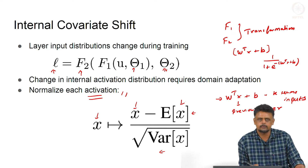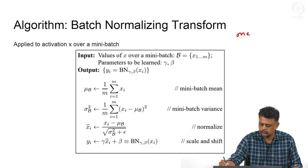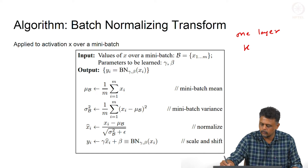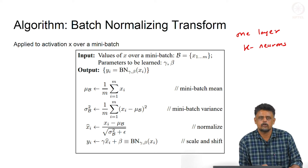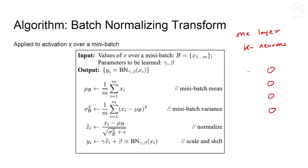We will go through the algorithm and it will be clear how this mean of X is calculated for every layer. We are considering one layer with K neurons. The batch normalizing transform is applied to that layer. If K is 4, we have inputs coming in from the previous layer, and the affine transform W transpose X plus B is computed, followed by a non-linearity that gives the output activation.